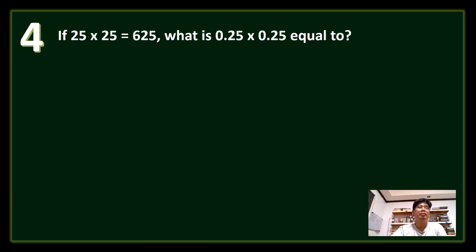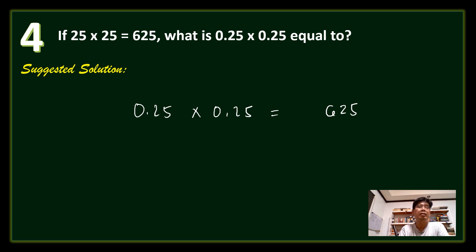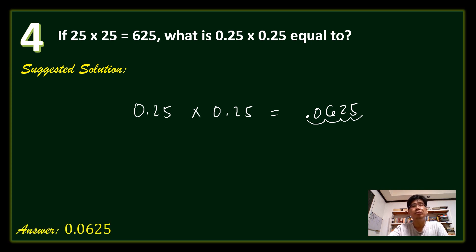Question number 4: If 25 times 25 equals 625, what is 0.25 times 0.25? We multiply as with ordinary numbers: 25 times 25 is 625. Then we count the decimal places from both factors: 0.25 has 2 decimal places and 0.25 has 2, giving 4 decimal places total. Counting 4 places from the right in 625 (with leading zeros), the answer is 0.0625, or 625 ten-thousandths.